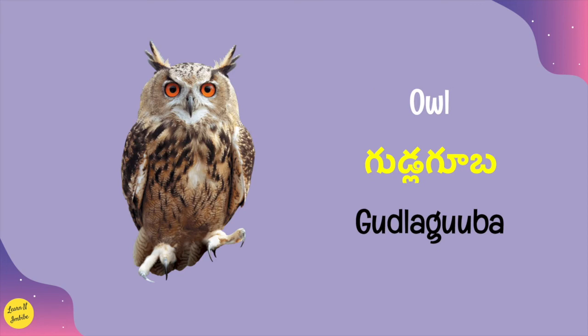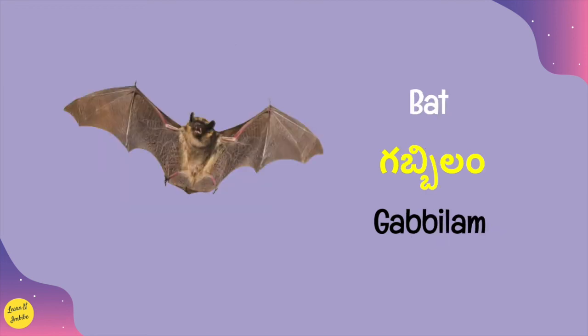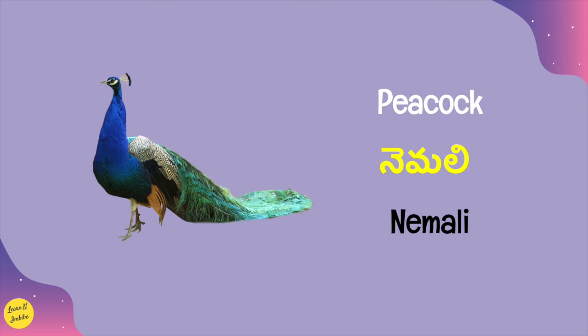Owl in Telugu is known by the name 'gudla gooba' — G-U-D-L-A, G-U-U-B-A. Bat is known as 'gubbilam' — G-A-B-B-I-L-A-M — gubbilam. Peacock is 'nemali' — N-E-M-A-L-I — nemali.